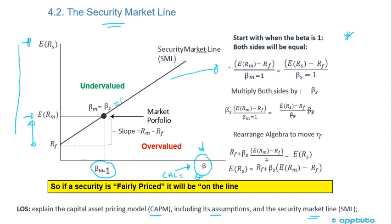Starting on the left-hand side: the expected return of the market minus the risk-free rate, divided by the beta of the market, equals the expected return of the stock minus the risk-free rate, divided by the beta of the stock — both equal 1 at this point. Multiplying both sides by the beta of the stock, we get: beta of the stock times the expected market return minus the risk-free rate, divided by the beta of the market (which is 1). Then moving the risk-free rate to the left-hand side, we get: the risk-free rate plus the beta of the stock times the expected return of the market minus the risk-free rate equals the expected return of the stock.